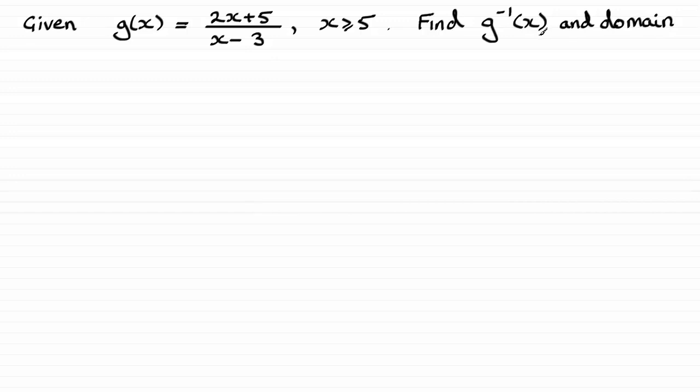Now when it comes to working out the inverse function what I like to do is say let x equal and wherever there's an x in the equation just change it to a y. So we've got 2y plus 5 all over y minus 3.